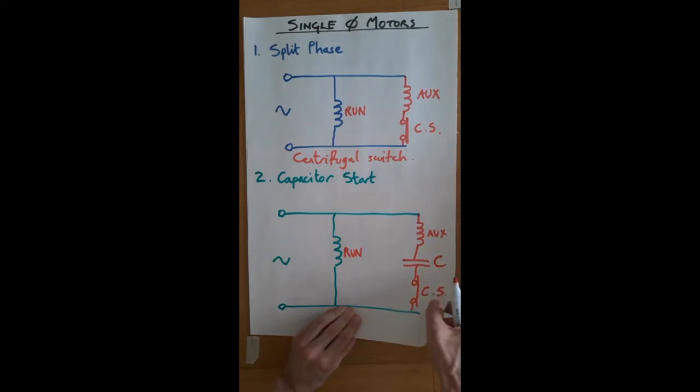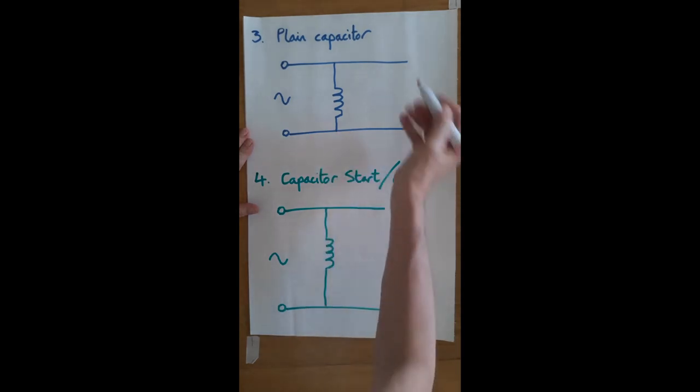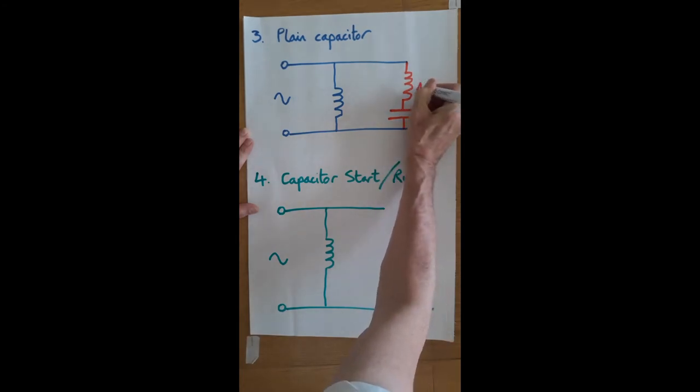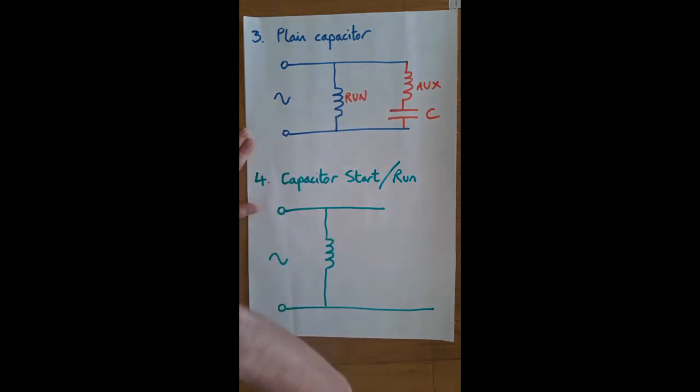The plain capacitor motor - I'm sure that many of you have seen these around. The plain capacitor motor has the auxiliary winding and it has a capacitor. So this is the auxiliary and this is capacitor, and this is the run winding. In this circuit, these are permanently left in circuit, they're not switched out. And this type of motor is very commonly used for central heating pumps, and that's probably the place where most of you will be likely to see it.